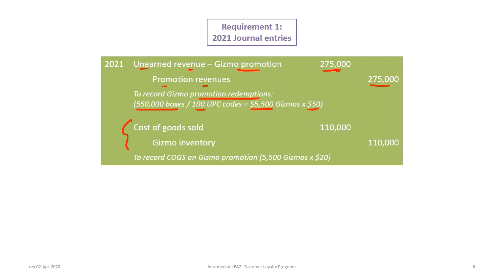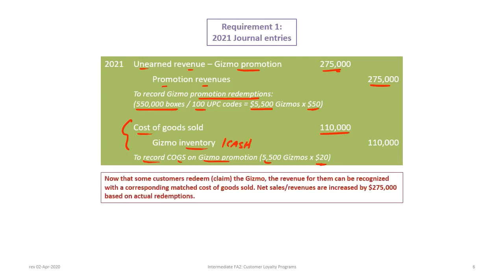Now that we are redeeming the actual gizmos, we record a cost of goods sold. The company doesn't manufacture gizmos — it sells cereal — so it has to purchase them. The cost of the gizmo is $20, so the cost of goods sold on the gizmo promotion is 5,500 units × $20 = $110,000, credited to inventory — or if the company did not pre-purchase the gizmos, cash or accounts payable. Now that customers have redeemed the gizmos, revenue is recognized with a corresponding matched cost of goods sold, and net sales are increased by $275,000 based on actual redemptions.